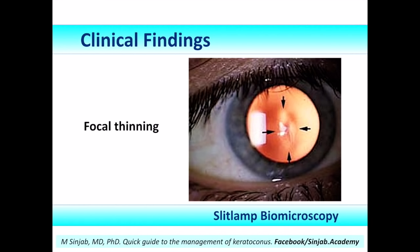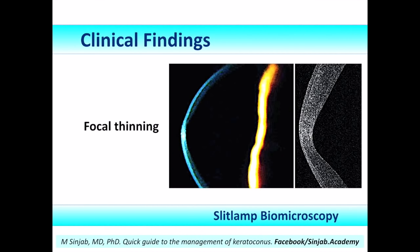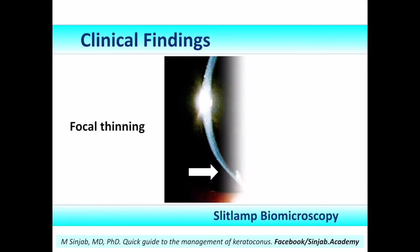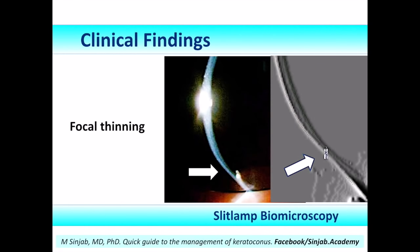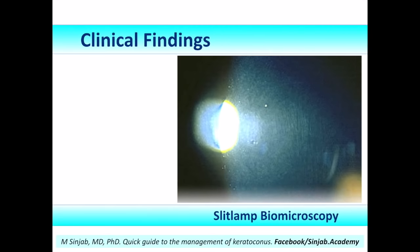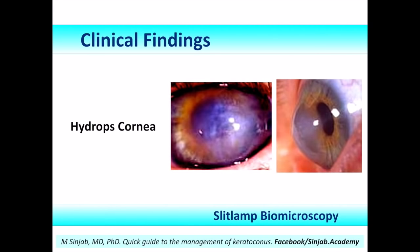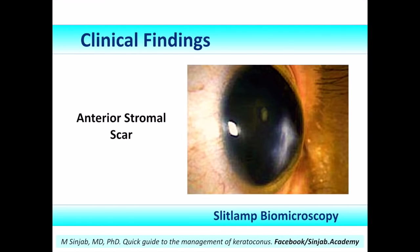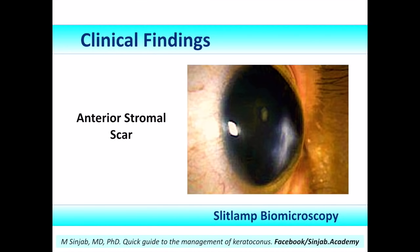On slit lamp biomicroscopy, we may also see focal thinning, which is best seen on retroillumination. Focal thinning may be central, paracentral, or peripheral, such as in pellucid marginal degeneration. Vogt's striae, or stress lines, are vertical lines detected in advanced cases of keratoconus due to stretching of Descemet's membrane under intraocular forces because of a very thin and weak cornea. We can also see hydrops cornea, anterior stromal scarring, or even full thickness scarring.